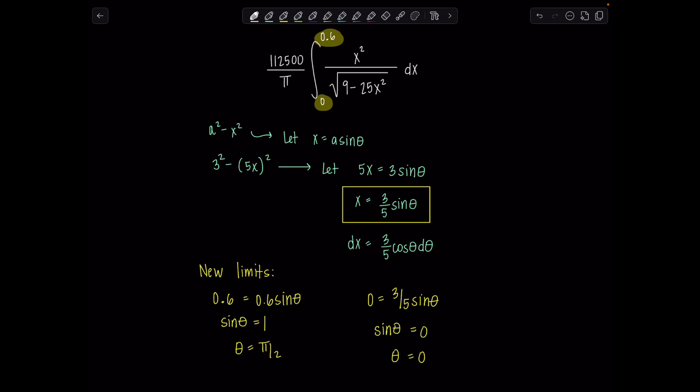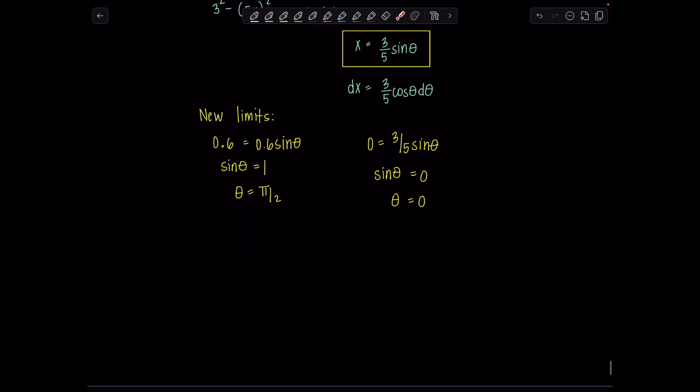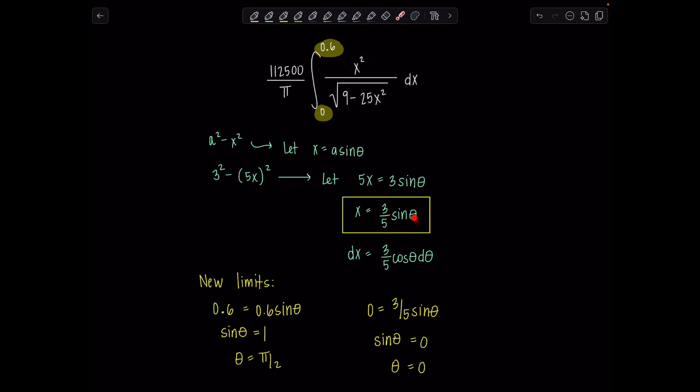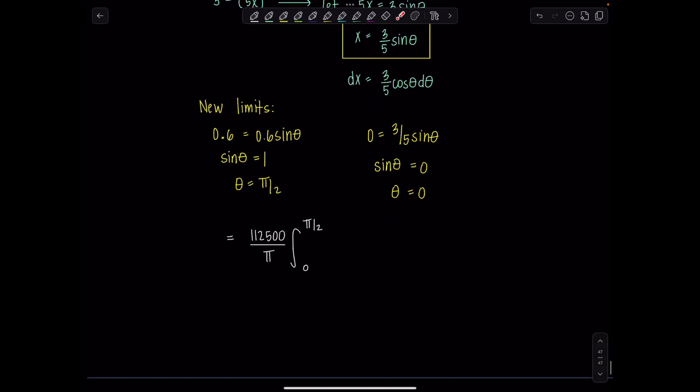Now let's rewrite our whole integral, all in terms of theta, with the new limits of integration, and just keep this constant outside. It's doing its job, don't worry about it. So we have 112,500 divided by pi. Now my integral goes from 0 to pi over 2. Don't forget, we had x squared up top, so that would be this whole quantity squared, 9 over 25 sine squared theta, over square root of 9 minus 25x squared, which is now 9 sine squared theta. And dx is 3 fifths cosine theta d theta.